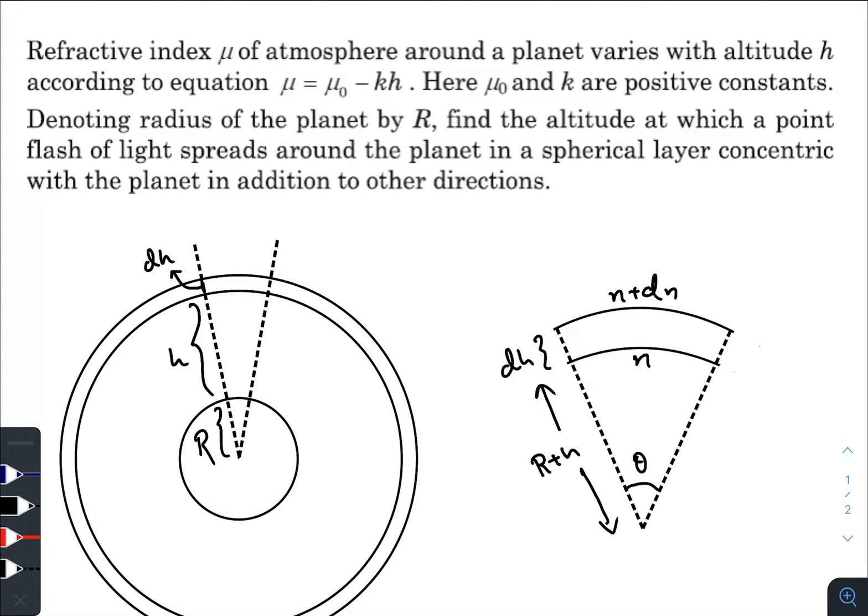Hey, what is up everyone, I hope all of you are doing great. In today's question we have a refractive index μ of atmosphere around a planet varies with altitude h according to the equation μ = μ₀ - kh, where μ₀ and k are positive constants. Denoting radius of the planet by R, find the altitude at which a point flashlight spreads around the planet in a spherical layer concentric with the planet in addition to other directions.